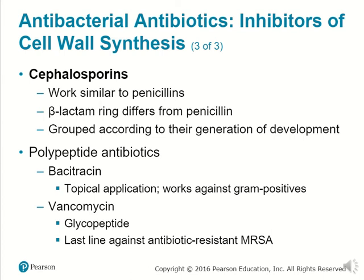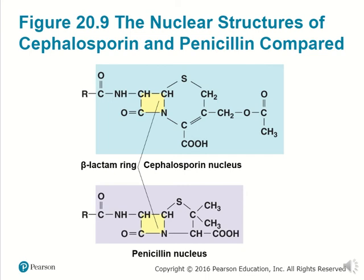There are also cephalosporins, which work similarly to penicillins. There is a beta-lactam ring that differs from penicillin, and they are grouped according to their generation of development. There are polypeptide antibiotics such as bacitracin, which has topical application onto the skin and works against gram-positive germs. There is vancomycin, which includes glycopeptides and is a last line of defense against antibiotic-resistant diseases. This shows the beta-lactam ring in cephalosporin as well as in penicillin.